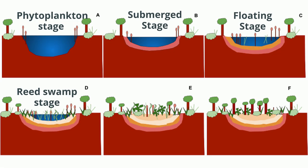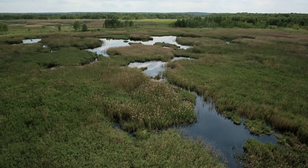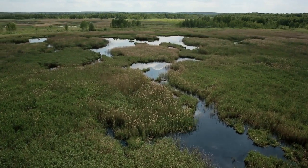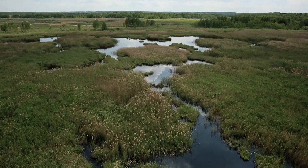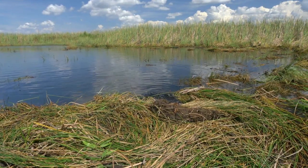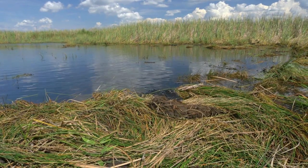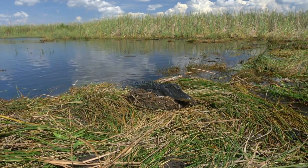Next you have the Reed Swamp Stage. The pond is now invaded by emergent plants such as reed grass and begins to form a marsh. The plants produce large quantities of leaf litter, and the surface of the pond is converted into a water-saturated, marshy land.